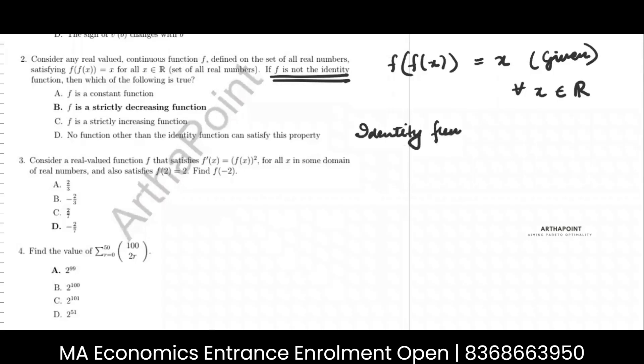An identity function has a property that f of x is equal to x. So if y is equal to x, then it is an identity function. So it says f of x is not equal to x because it says it is not an identity function. This is given to us.